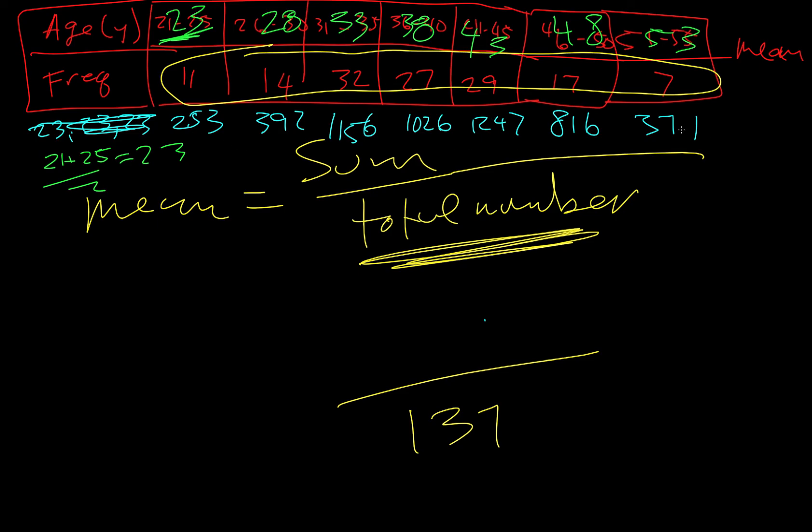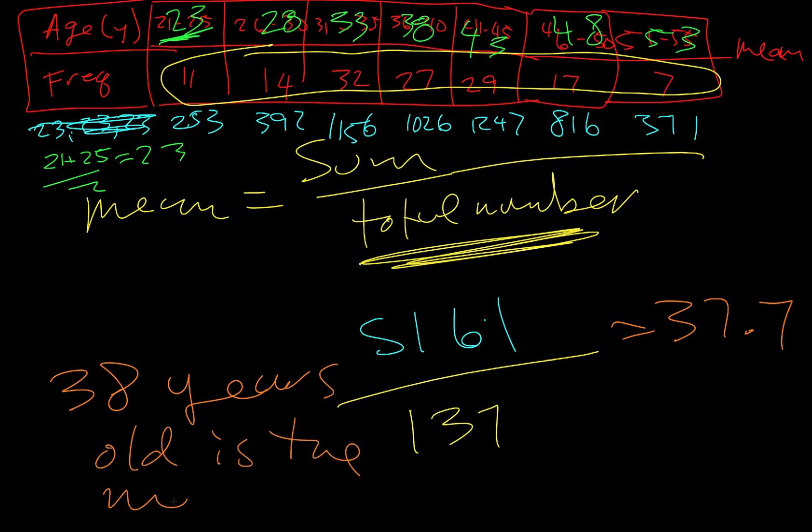Now to get the sum of this, we just add all these blue numbers together, and that gives us 5161. And then if we just divide, 5161 divided by 137, that gives us 37.7. And so if we're rounding that to the nearest year, 38 years old is the mean age of the bus drivers.